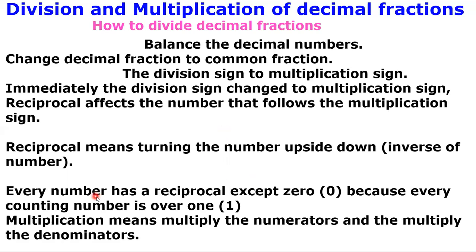Every counting number has a reciprocal except zero. Every whole number is over one — two over one is the same as two, three over one is the same as three. So when they ask you what is the reciprocal of two, keep in mind that two is the same as two over one. Therefore, the reciprocal of two is one over two, because when you turn two over one upside down, you get one over two.